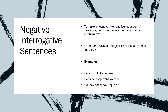Negative Interrogative Sentences: To make a negative interrogative sentence, combine the rules for negatives and interrogatives. Formula: do/does + subject + not + base form of the verb. For example: do you not like the coffee? Does he not play basketball? Do they not speak English?